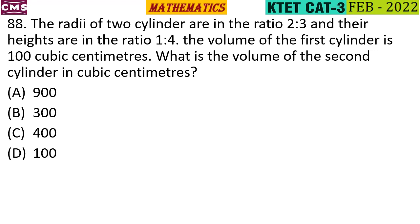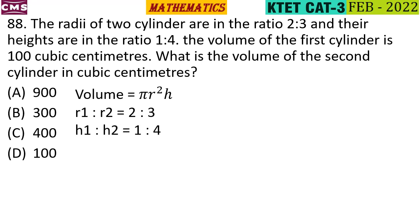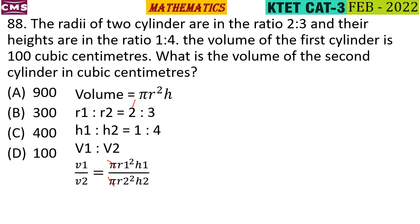R1 to R2 is 2 to 3, and H1 to H2 is 1 to 4. V1 to V2 equals pi R1 square H1 to pi R2 square H2. Substituting: R1 is 2, R2 is 3, H1 is 1, H2 is 4. So we get 2 squared times 1 to 3 squared times 4, which is 4 times 1 to 9 times 4, giving 1 to 9.